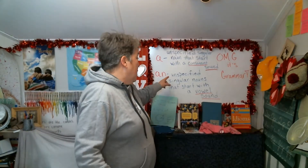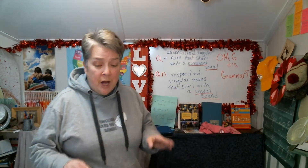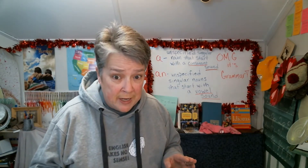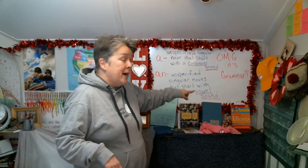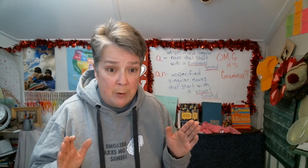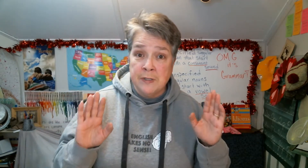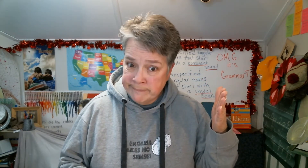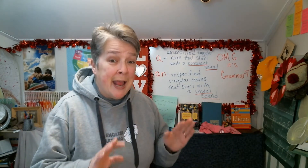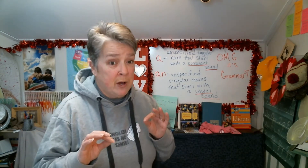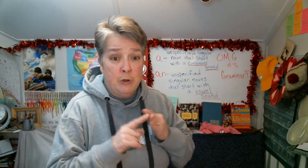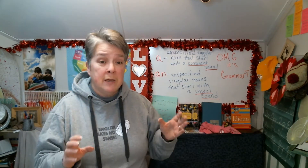If we want to use 'an' — A-N — we use that for unspecified singular nouns that start with a vowel sound. Remember that: a vowel sound, not just a vowel. Remember your vowels: A, E, I, O, or U. We can use 'an' for short vowel sounds like: an egg, an igloo, an umbrella, an octopus. All those are nouns that start with a short vowel sound.